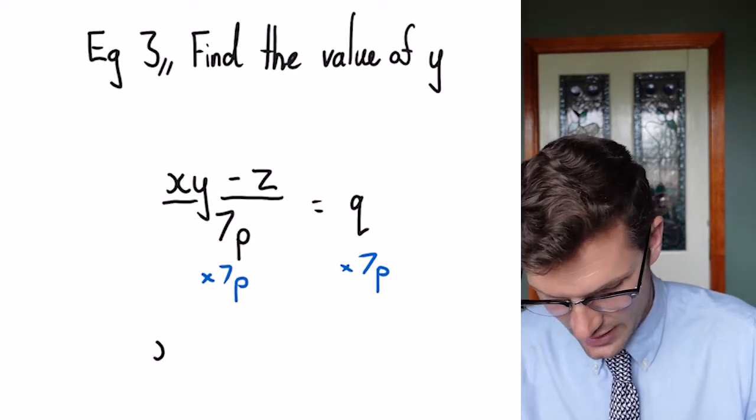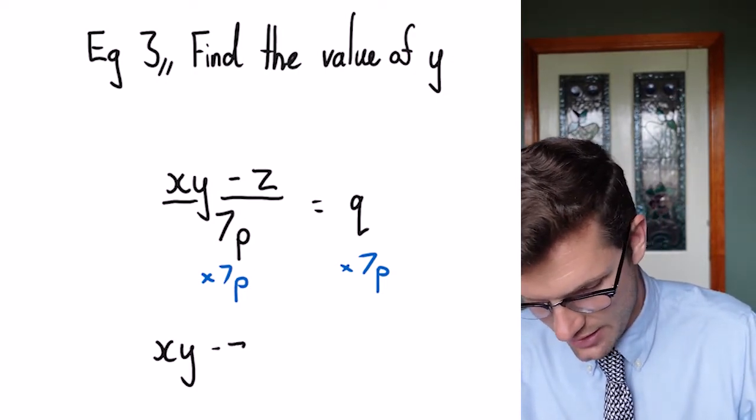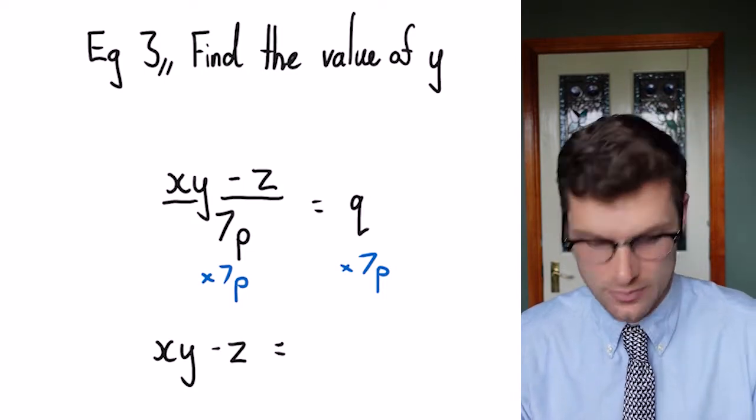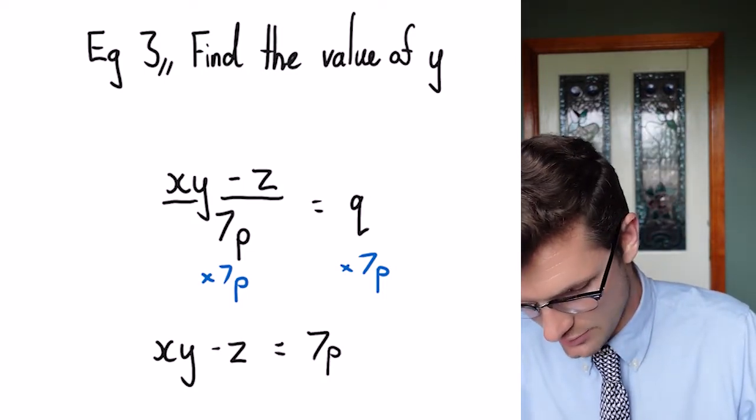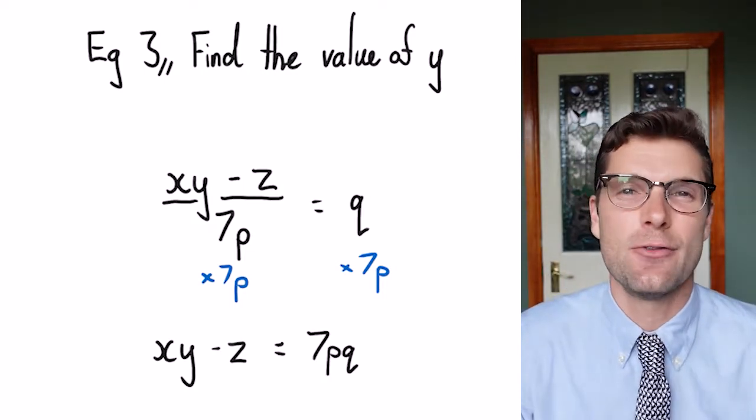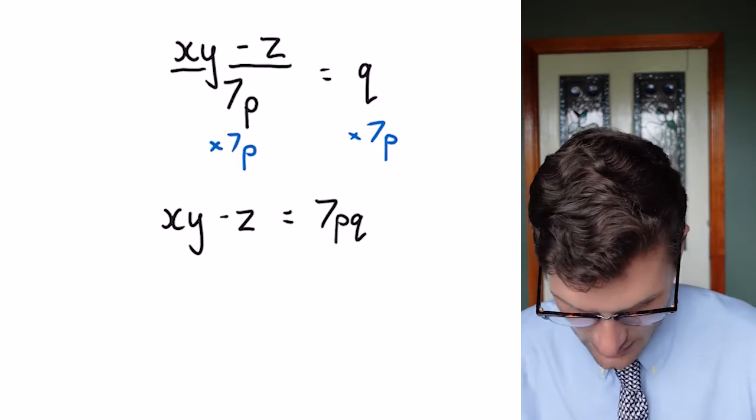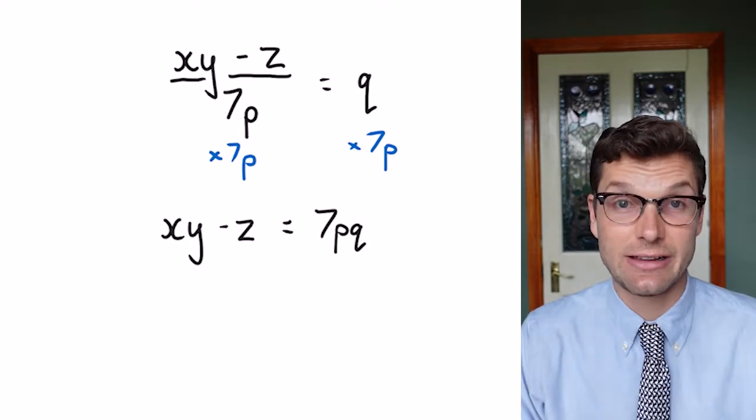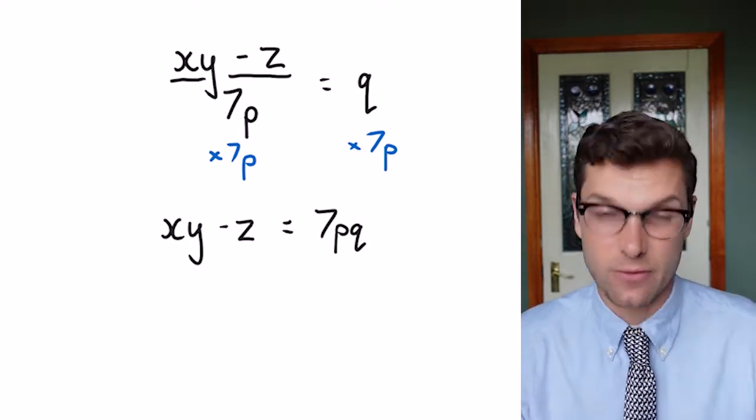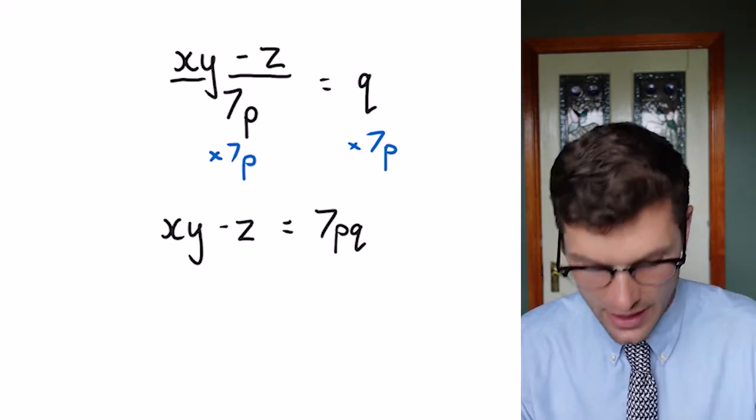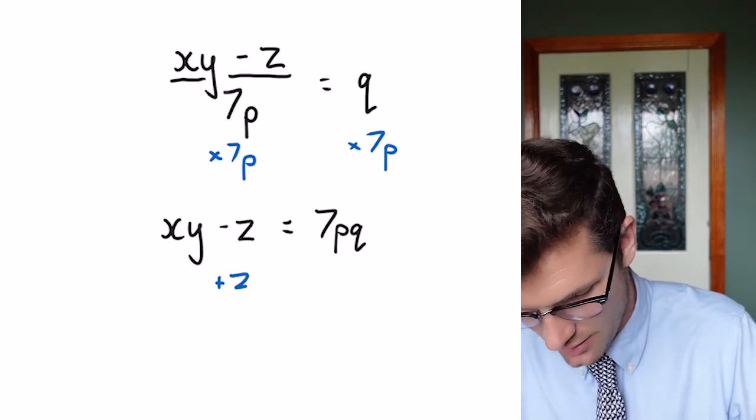That's going to leave us with xy minus z is equal to 7p times q is just 7pq. You can write that in a different order, but it's just kind of the standard to have the number first. Then we're still dealing with getting that y. So we've got to deal with what's furthest away from that. So we're going to plus z plus z.